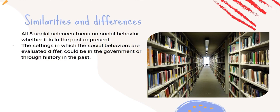Now I'll talk about the similarities and differences of the eight social sciences. The similarity between them is that they all focus on social behavior, whether past or present. We can see this through sociology, psychology, and basically all of them — they all focus on people and how they interact. What is different among them is the settings in which those social behaviors occur. For example, in anthropology we evaluate ancestors and people from the past, whereas in sociology we evaluate people now in group settings. So there are different settings that the eight social sciences focus on, but at the end of the day, they all focus on people's behaviors.